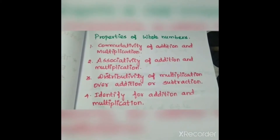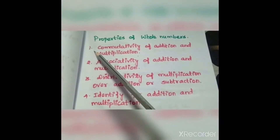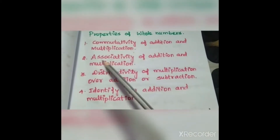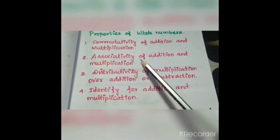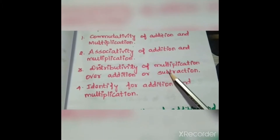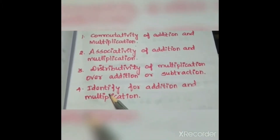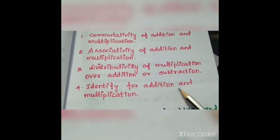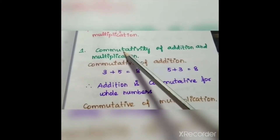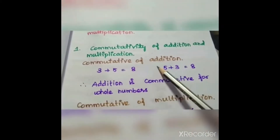Next, we are going to discuss properties of whole numbers: number one, commutativity of addition and multiplication; number two, associativity of addition and multiplication; number three, distributivity of multiplication over addition or subtraction; and number four, identity for addition and multiplication. First, we will see the commutative property of whole numbers.